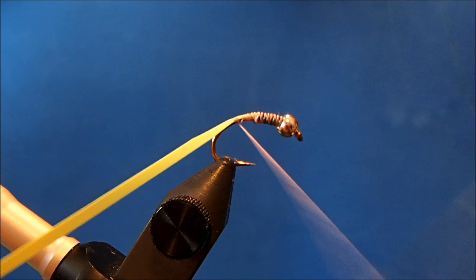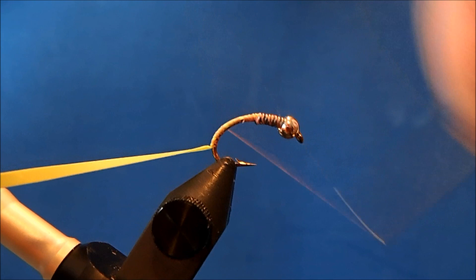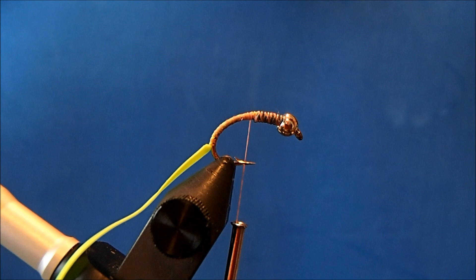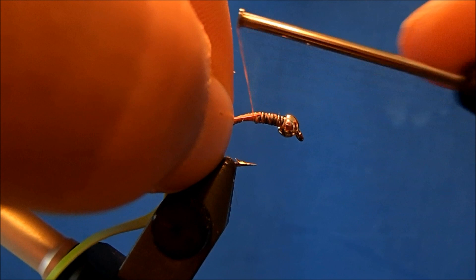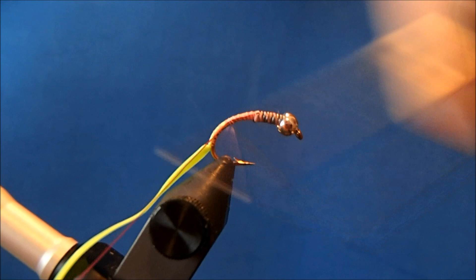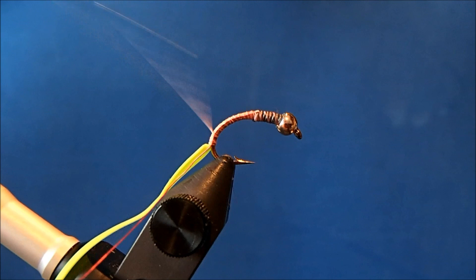And I'll put that behind the lead and then stretch it down the bend so it gives a slimmer profile. I'm going to put a rib into this and I'm going to use a small pink wire and tie that into the side and down the bend.